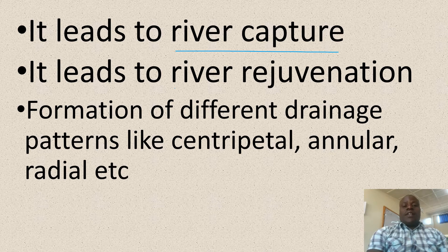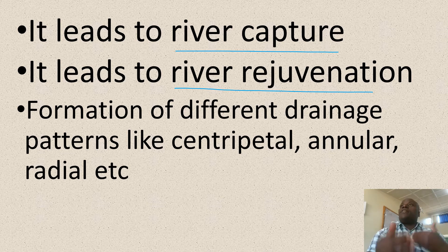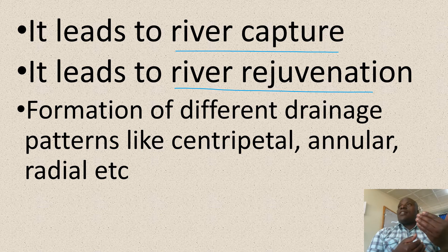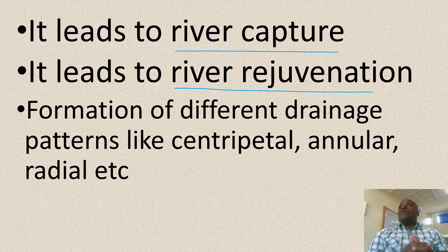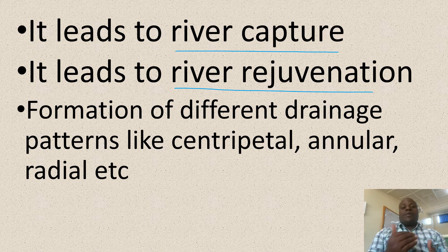It leads to river rejuvenation. This is when a river regains its power to erode — a river regains its erosive power. So in the case of down-warping, a steep gradient is formed where the river will begin to flow faster, increasing its level of erosion.